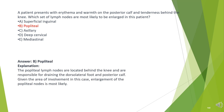The answer is B. Popliteal. The popliteal lymph nodes are located behind the knee and are responsible for draining the dorsolateral foot and posterior calf. Given the area of involvement in this case, enlargement of the popliteal nodes is most likely.